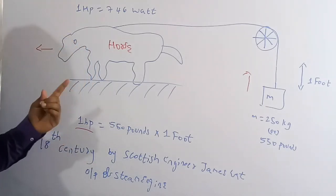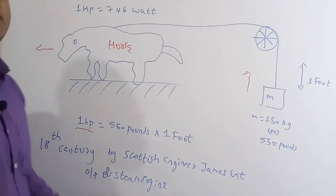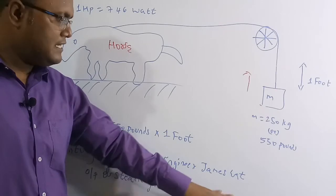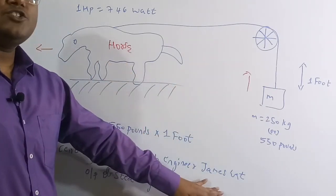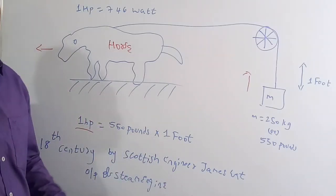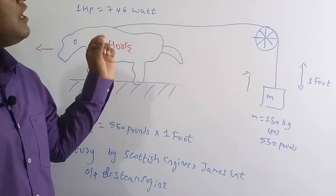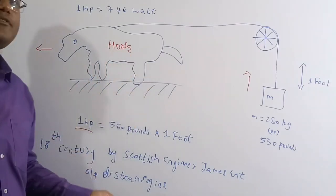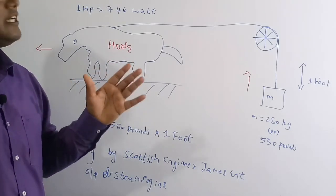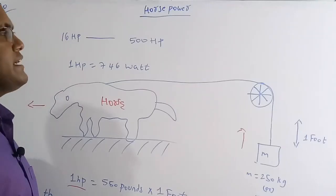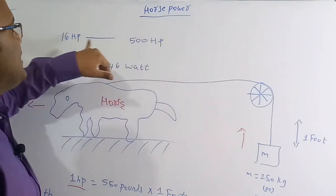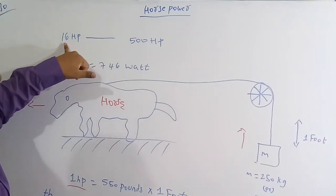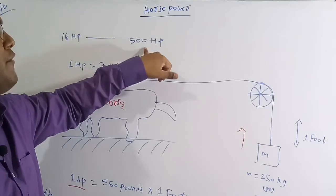The term horsepower was first used by Scottish engineer James Watt, who invented the steam engine. He used this unit to calculate the output of his steam engine. To conclude, the unit of power used for tractors is HP — from 16 HP for the smallest to 500 HP for the largest currently available.